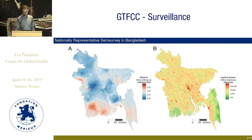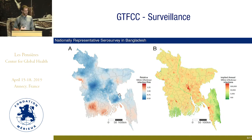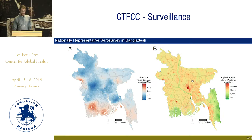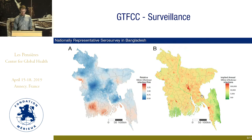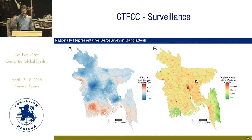We also see elevated risk here in the west on the border with India, a patch in the middle, and in Cox's Bazar and Chittagong. In terms of public health relevance, relative risk is only one measure. When we multiply the map by the population in each small area, Dhaka — which is not particularly red — has so many people living there that it contributes a large number of infections. Our preliminary estimates suggest about 20 million infections per year in Bangladesh.